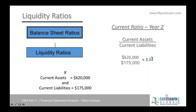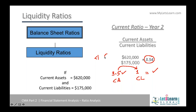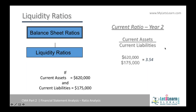That gives us 3.54, meaning we have $3.54 of current assets for every $1 of current liability. This means we have enough current assets to pay our current liabilities and our current financial position is good. If the ratio were less than one, it would mean we do not have enough current assets to pay current liabilities and would fail to meet obligations on time.